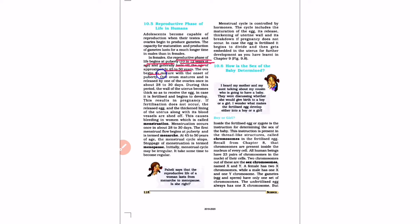The ovum begins to mature with the onset of puberty. As puberty starts, ova start maturing. One ovum matures and is released by one of the ovaries once every about 28 to 30 days.